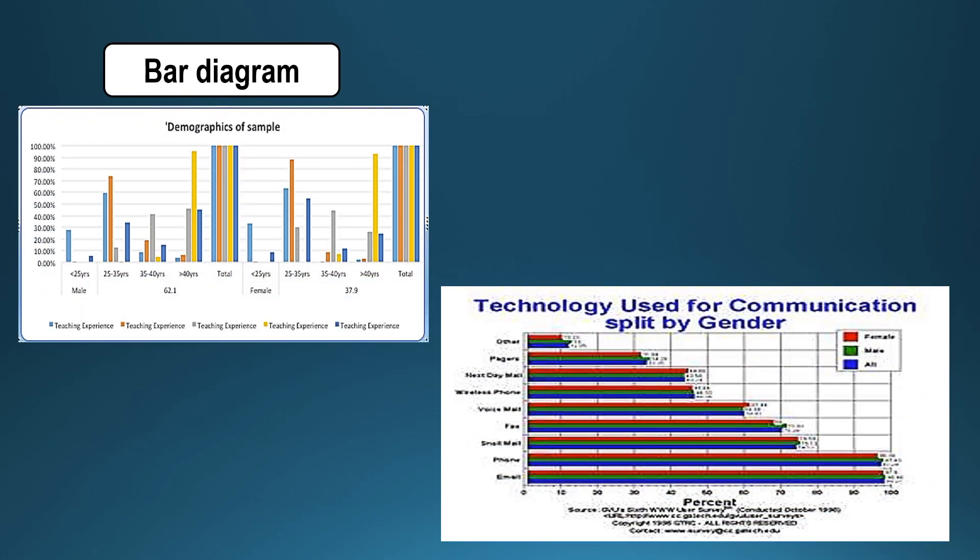One can draw a column diagram or a bar diagram to represent the data. For example, if you are interested in the characteristics of the sample selected for a study and you have included male and female with varied years of experience or age, you can think of converting the data into a bar diagram. Or if you are interested in finding out the technology used for communication split by gender, you can represent it by a bar diagram.